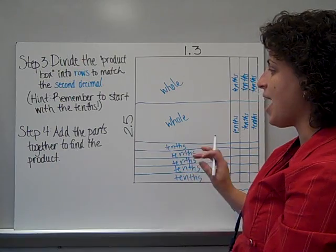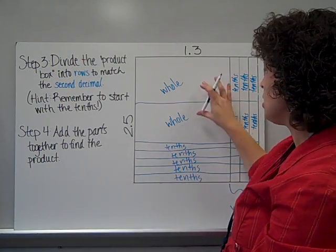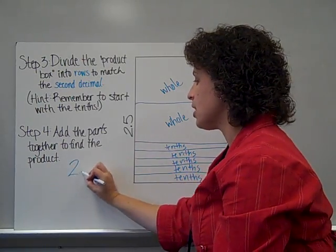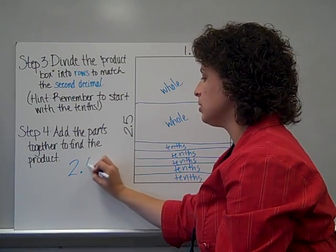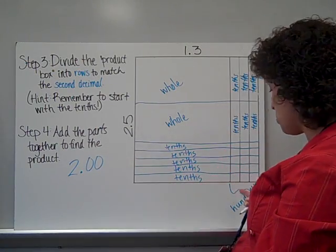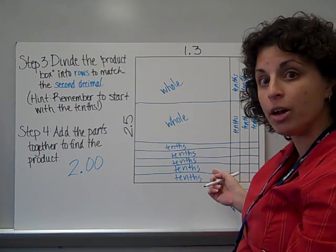Okay, the final step is to add all the parts together to find the product. So I've got 2 wholes, which is the same as 2 and nothing, and I'm going to the hundredths place, because my smallest piece here is the hundredths.